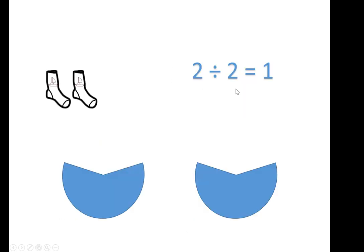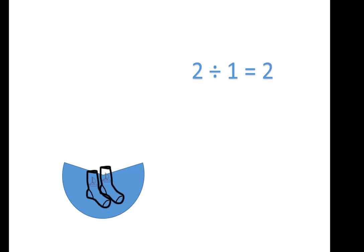2 divided by 2 is 1. I can get 2 groups of 1 out of 2 socks. 2 divided by 1 is 2. I can get 1 group of 2 out of the same amount of socks.